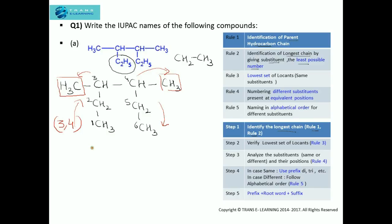Now if I start from the right-hand side, giving this carbon atom number 1, the chain is: 1, 2, 3, 4, 5, 6. This is the longest chain, and in this case the lowest set of locants is again 3 and 4 — so it's the same. It doesn't make any difference whether I start numbering from the left or right. We have verified the lowest set of locants.